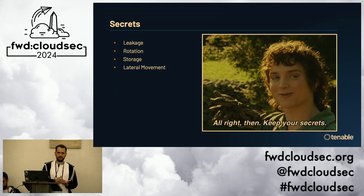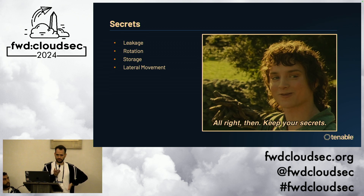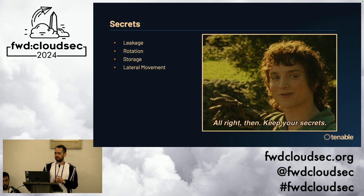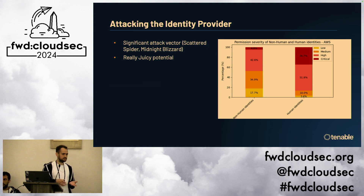We've also seen exploitation techniques like Log4Shell, where many exploitation strings were crafted to look for AWS credentials or environment variables — landing on one machine and ending up making that hop. The second major vector is attacking the identity provider explicitly, and we've seen that as a significant attack vector in the major breaches of the past year: Scattered Spider, Midnight Blizzard — these identity-based attacks.